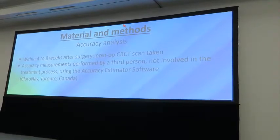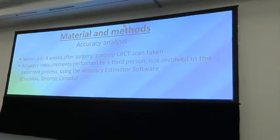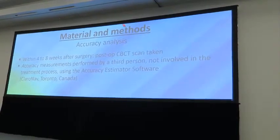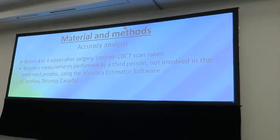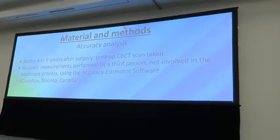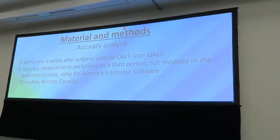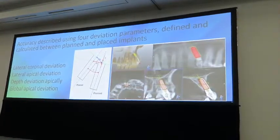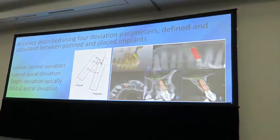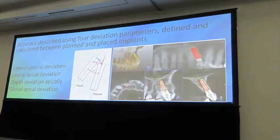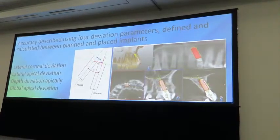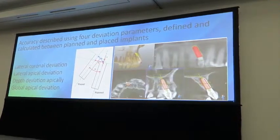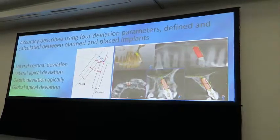Within four to eight weeks after surgery, post-operative CBCT scans were taken purely for research purposes. Accuracy measurements were done by a third person not involved in the planning or execution of the surgeries, using accuracy estimation software incorporated in the planning software. Accuracy was described using four parameters by superimposing the pre-operative plan on the post-operative scan: lateral coronal deviation, lateral apical deviation, angular deviation, and global apical deviation.